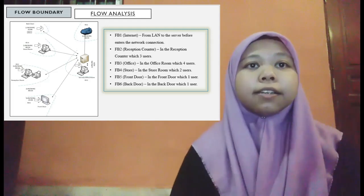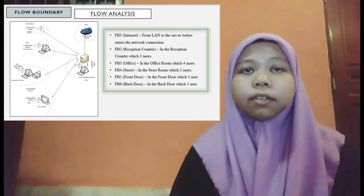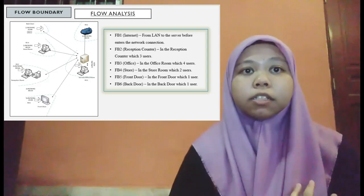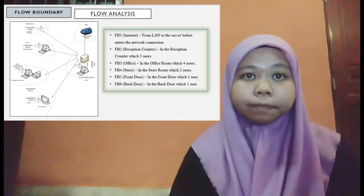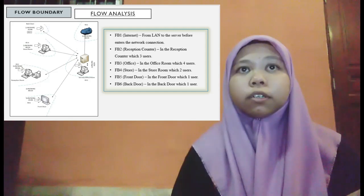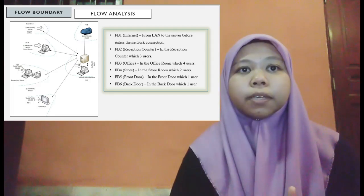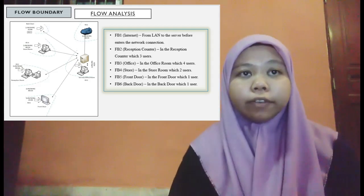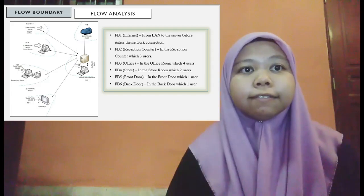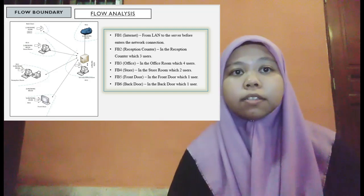As you can see in the diagram, the internet is represented as a cloud. There is a server, PCs, and one LCD screen at the front door for advertisement purposes. There will be a total of 5 CCTV cameras across every area, and there is also a printer at the reception that can be used by both the reception room and the server room.